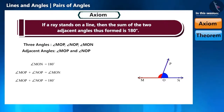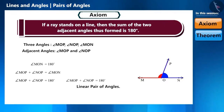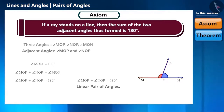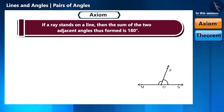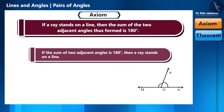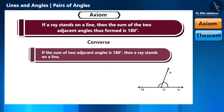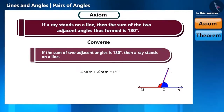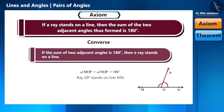And if the sum of the two adjacent angles is 180 degrees, then they form a linear pair of angles. Now the axiom that we are going to learn is completely opposite to this axiom: if the sum of two adjacent angles is 180 degrees, then a ray stands on a line. We call this the converse of the axiom that we just learned. If we are given that angle MOP plus angle NOP is equal to 180 degrees, then we can conclude that ray OP stands on line MN.